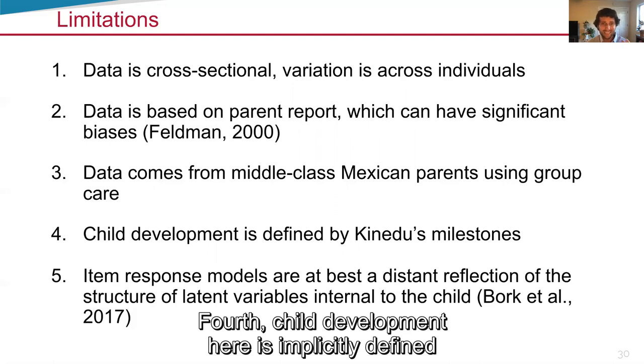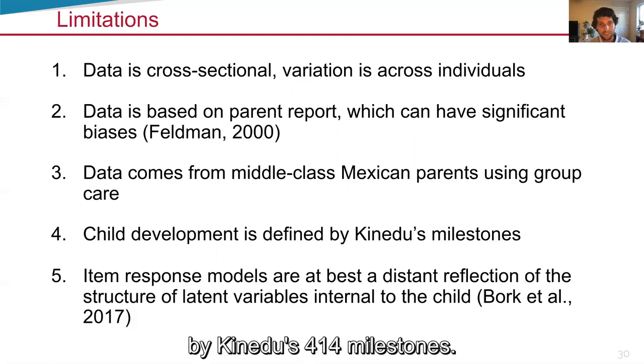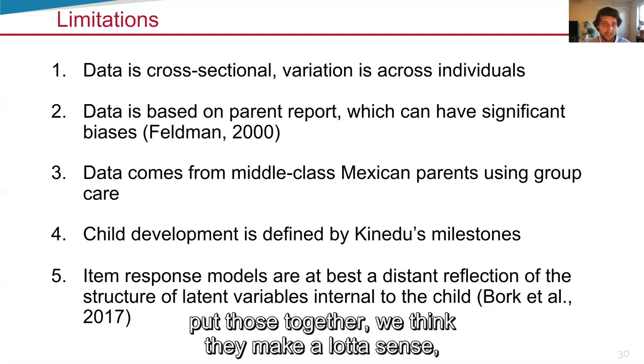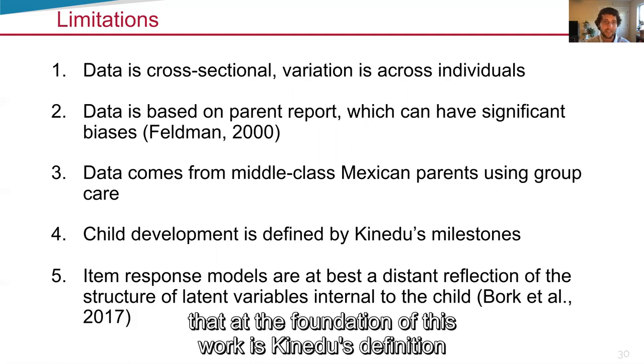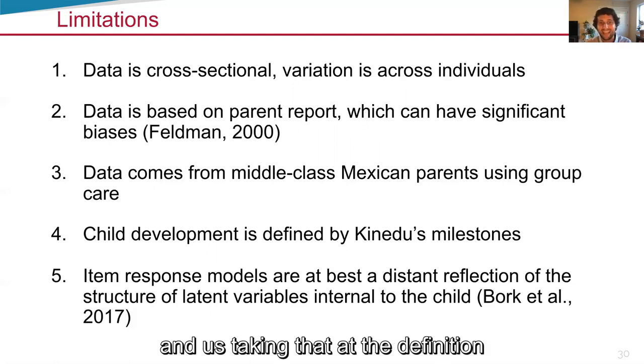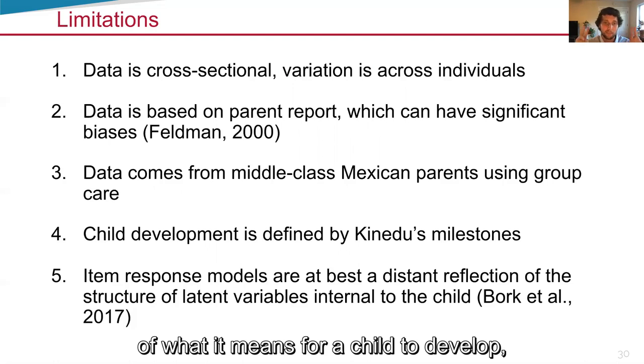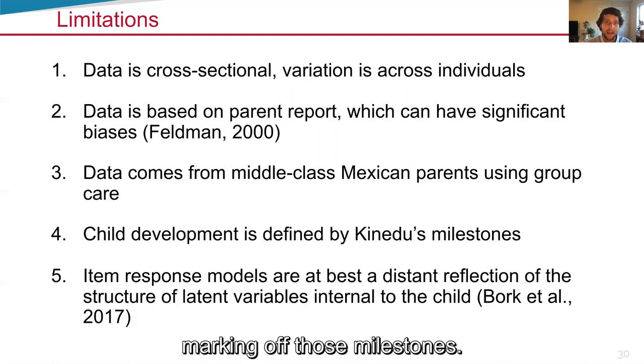Fourth, child development here is implicitly defined by Kinedu's 414 milestones. We think they thoughtfully put those together. We think they make a lot of sense, but it is important to point out that at the foundation of this work is Kinedu's definition of those milestones, and us taking that as the definition of what it means for a child to develop, marking off those milestones.